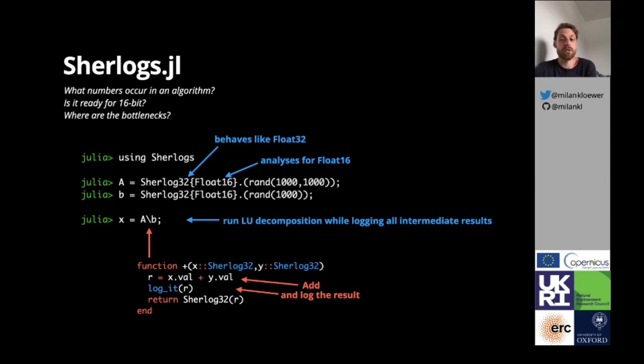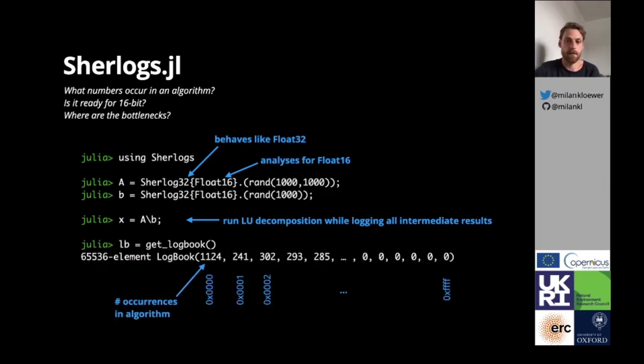Addition for Sherlocks is just defined as a normal addition, but it also calls the function logit with a result before then actually returning it. The logbook can then be retrieved after completion, which contains for every number a counter of occurrences, which is the bit-pattern histogram. In this example, Float16 0 occurred more than a thousand times in the LU decomposition.